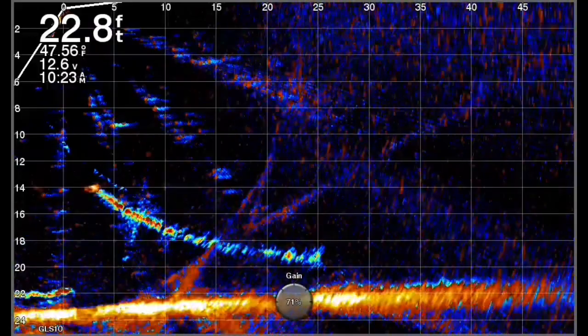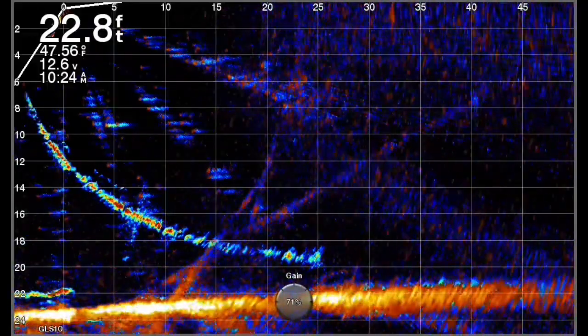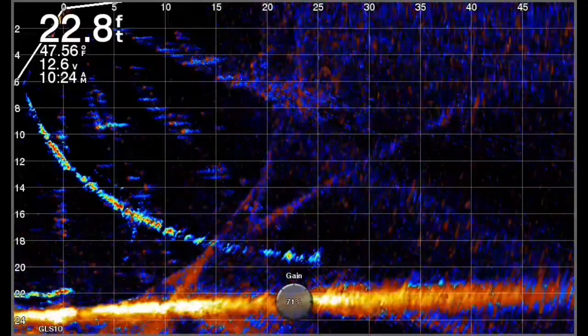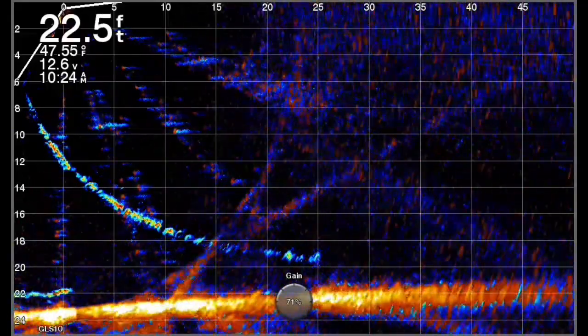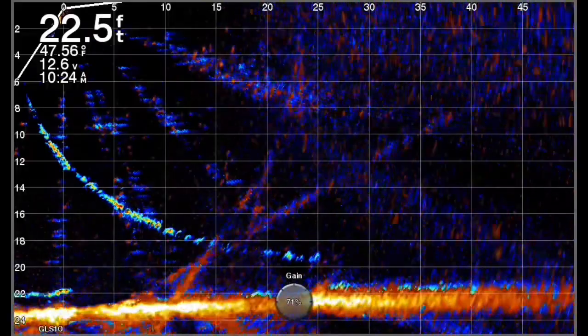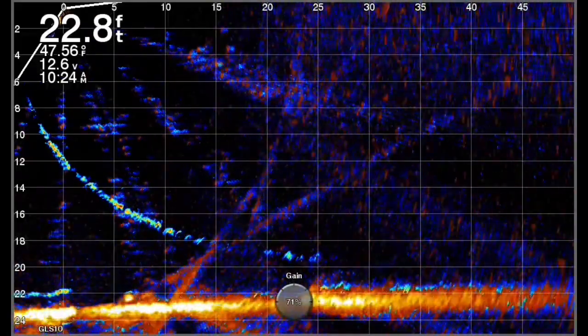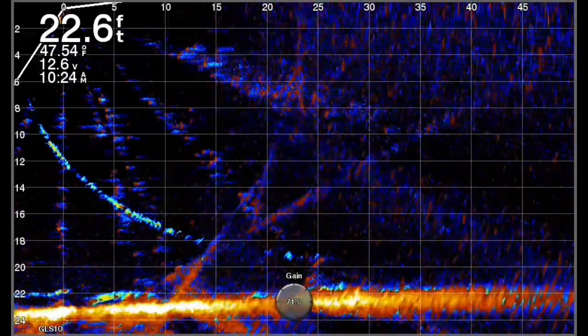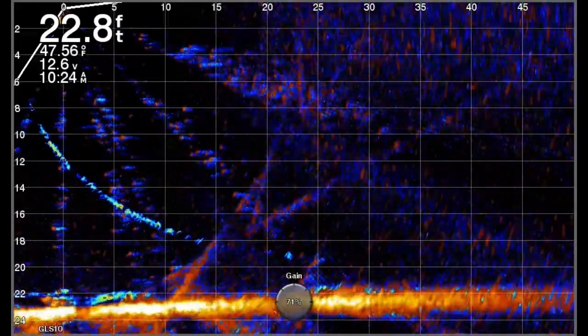So definitely 12-pound makes a huge difference in this test, not only in depth—look how deep that one dove, I mean it is getting down there—not only in depth but also in being able to make that long cast to achieve that maximum depth. Some of the shallower crankbait tests, they're going to get to their depth a lot easier than this one right here.